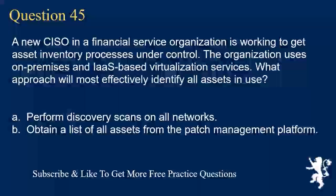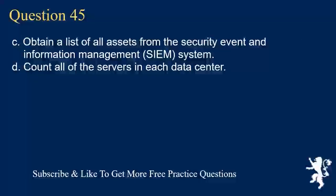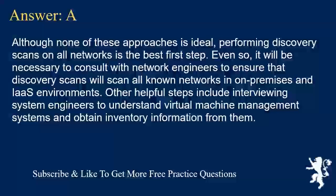Question 45. A new CISO in a financial services organization is working to get asset inventory processes under control. The organization uses on-premises and IaaS-based virtualization services. What approach will most effectively identify all assets in use? A. Perform discovery scans on all networks. B. Obtain a list of all assets from the patch management system. C. Obtain a list of all assets from the SIEM system. D. Count all of the servers in each data center. Answer A. Although none of these approaches is ideal, performing discovery scans on all networks is the best first step. It will be necessary to consult with network engineers to ensure that discovery scans cover all known networks in on-premises and IaaS environments. Other helpful steps include interviewing system engineers to understand virtual machine management systems and obtain inventory information from them.